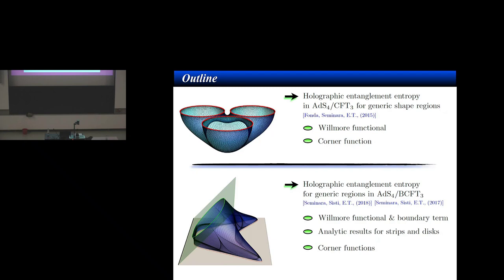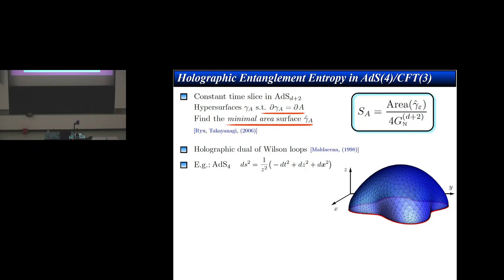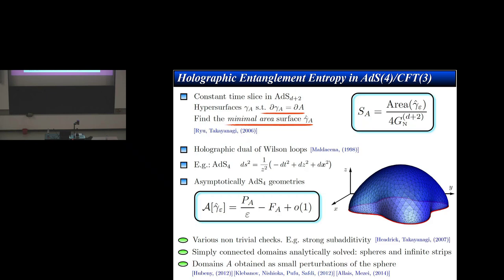This is just the definition of entanglement entropy — I will skip it since Michael gave a great review before. So this is the quantity we are interested in: the von Neumann entropy of the reduced density matrix for a spatial bipartition of the system. I will use the Ryu-Takayanagi formula, which tells us that the leading order in the large-N limit of entanglement entropy is computed by evaluating the area of the minimal surface anchored to the boundary of A. If your bulk geometry is four-dimensional, you can expand the area — this is the famous area law.